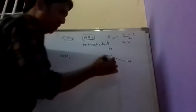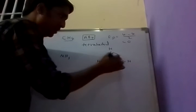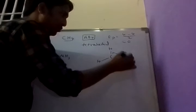In tetrahedral shape, angle between any two bonds is 109 degrees 28 minutes.